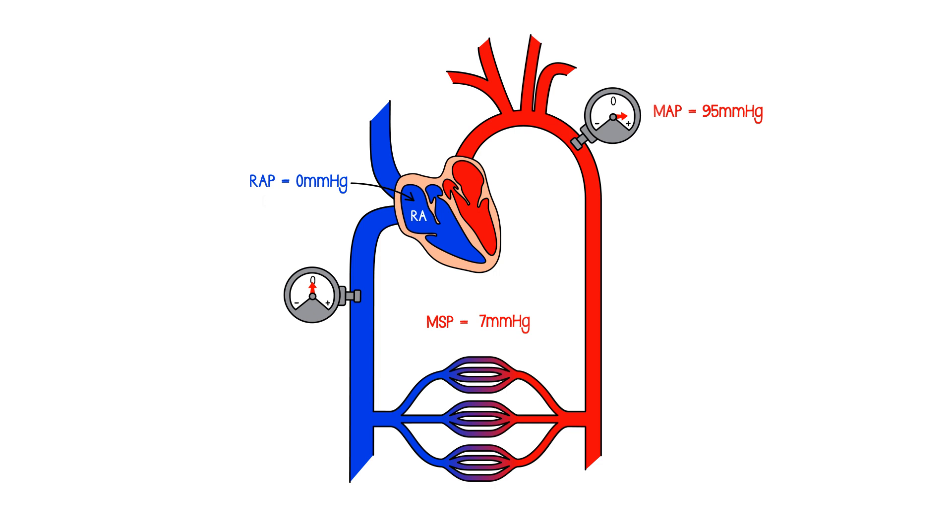OK, well this makes sense to a certain extent because we've taken blood out of the venous side, so the pressure there has dropped. We've put that same amount of blood into the arterial side and stretched it a bit, so the pressure there has gone up. But our starting point was with mean systemic pressure, 7 millimeters of mercury, everywhere in the system.